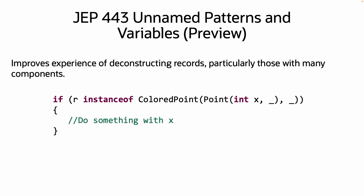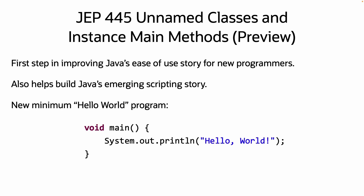JEP 443, unnamed patterns and variables, will improve the experience of working with record patterns, particularly records with a lot of components, by allowing developers to use an underscore for components they are not intending to use.